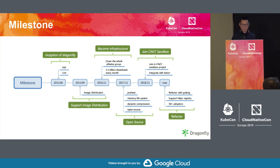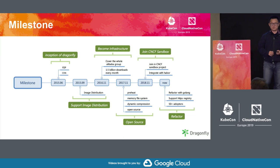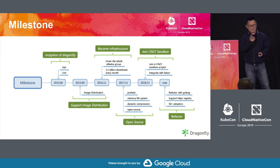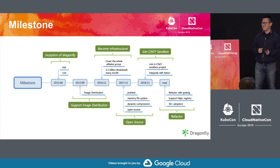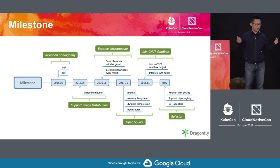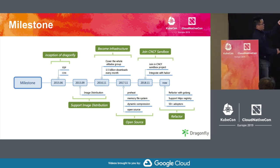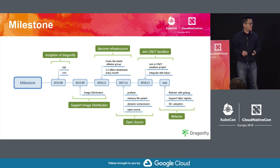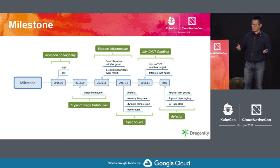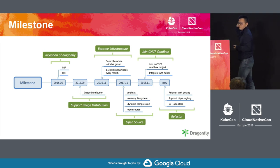We are doing a refactoring with Golang. At the beginning, we used three languages — Python for the supernode, Java, and Golang for the proxy. Now we are making it unified with Golang. We support HTTPS registries, and we have more than 50 adopters — and I think the real number is much larger.